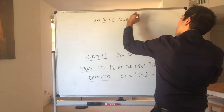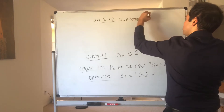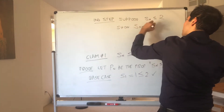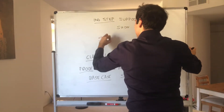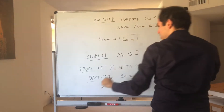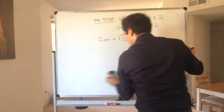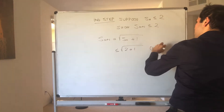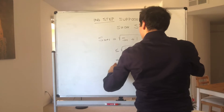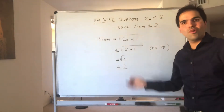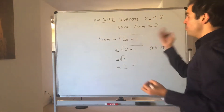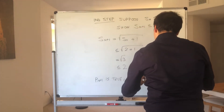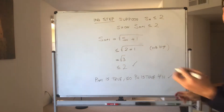Suppose Pn is true, so suppose Sn is less than or equal to 2. We want to show Pn+1 is true, i.e., Sn+1 is less than or equal to 2. But Sn+1 is just the square root of Sn plus 1, which is less than or equal to the square root of 2 plus 1 by the inductive hypothesis. That equals the square root of 3, and the square root of 3 is less than or equal to 2, because 2 is the square root of 4. Therefore Pn+1 is true, so Sn is less than or equal to 2 for all n.